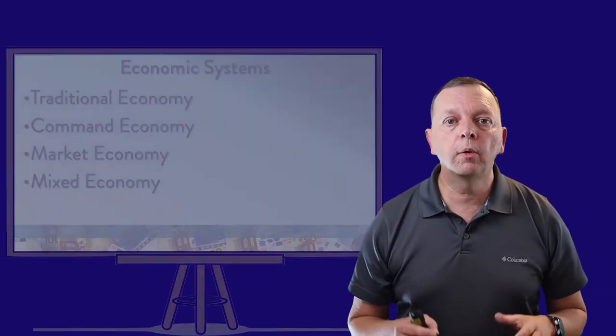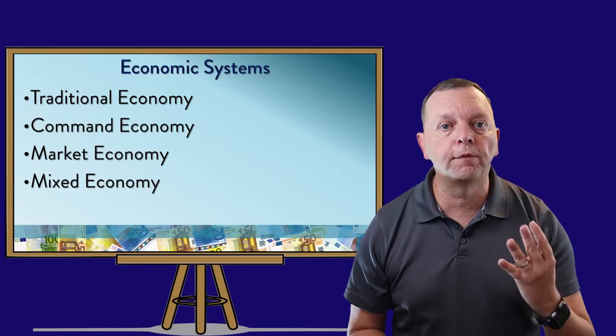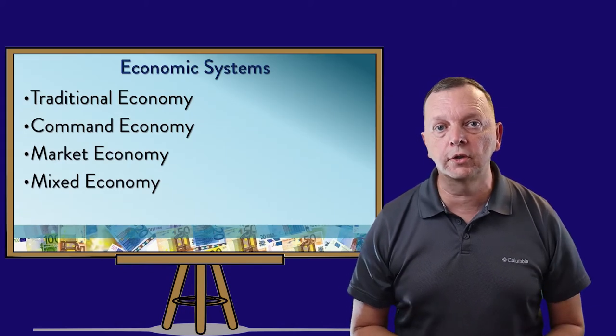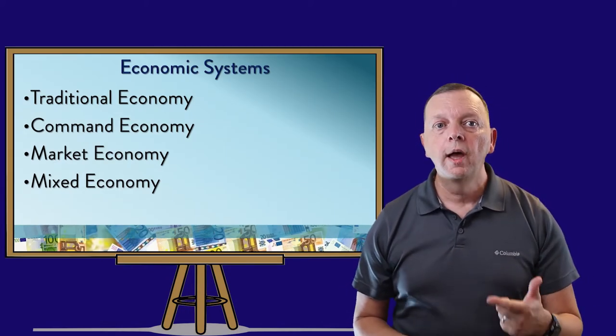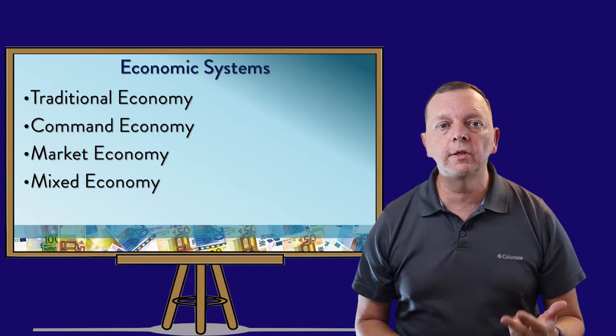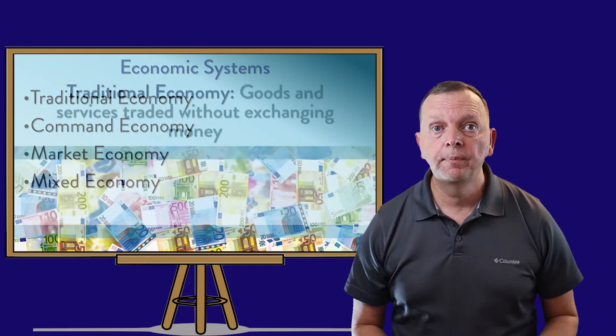So those are the basic economic activities and types of resources. Now, we're talking about economic systems. There are four major systems: traditional economies, command economies, market economies, and something known as mixed economies.